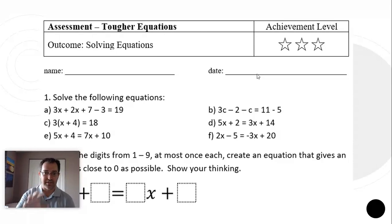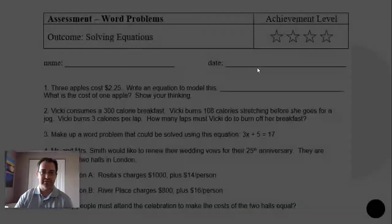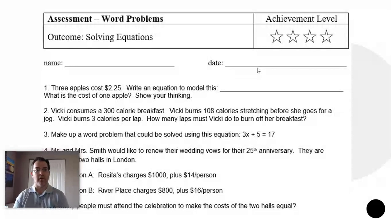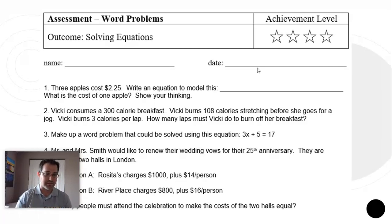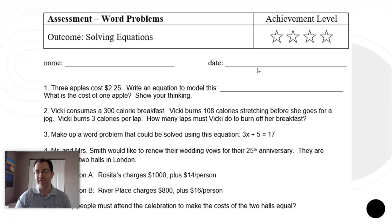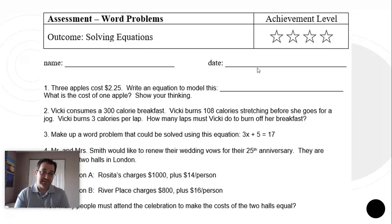If students can do this level 3 assessment, they've demonstrated they're up to level 3. And here's level 4 — we've got a whole bunch of word problems, giving students a chance to try some more challenging problems. Notice the variety: question one is a pretty straightforward one-step equation, whereas question four at the bottom would be quite challenging. If a student is still working on level 1 or trying to move into level 2, they're probably not ready for this, and that's okay.